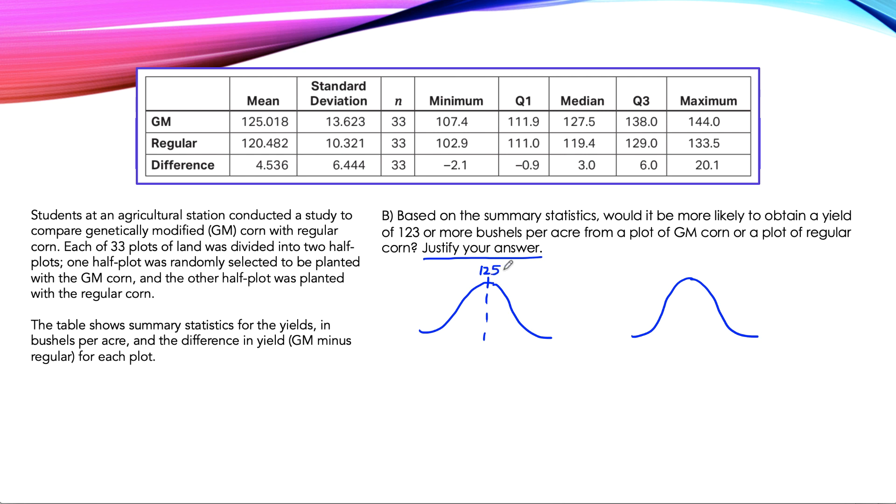This one is going to be the genetically modified corn. I put 125 in the center because mean is a representation of the center of your data. And I'll put 120.5 over here for the regular corn. The question asks us for 123 or more. So 123 falls to the left of the mean, and 'or more' means we're going to shade to the right. We're going to do the same thing for regular corn, except here 123 falls to the right of the mean.